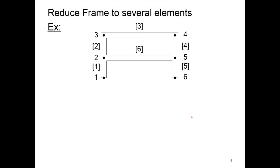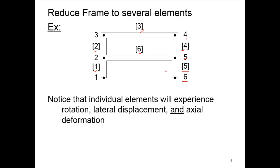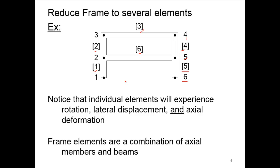If we reduce this frame to several elements, we'd have nodes at all the connection points — six nodes, and then six elements. Notice that the individual elements will experience rotation, lateral displacement, and axial deformation. With a distributed load on top and a point load on element six, these would act like beams, so we'd have lateral deflection as well as some rotation at node two, and axial deformation for those receiving the load. This involves both axial loading as well as lateral loading.